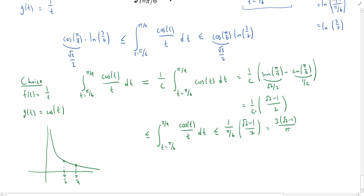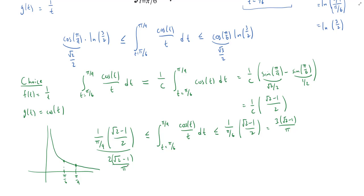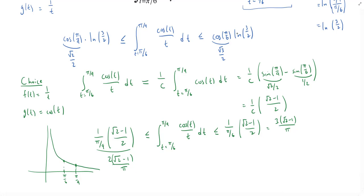We can't make 1/c any smaller than when c = π/4, so that gives a lower bound: (1/(π/4)) × (√2−1)/2. Simplifying: 4 cancels with 2, giving 2(√2−1)/π. So the integral cannot be bigger than 3(√2−1)/π and cannot be smaller than 2(√2−1)/π — we've found an upper and lower bound. With a calculator we could see which choice gives a better approximation, but for the exam it's sufficient to leave it in this exact form.